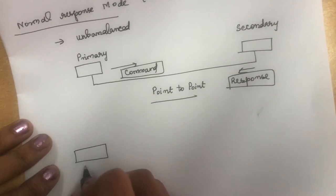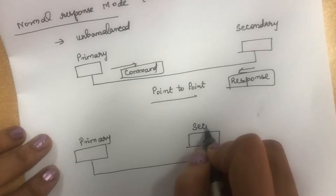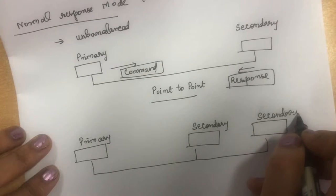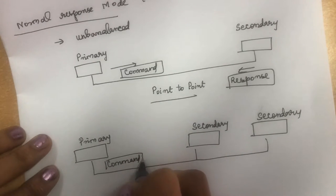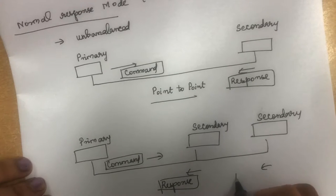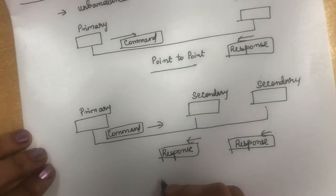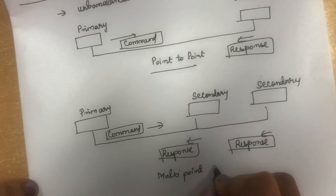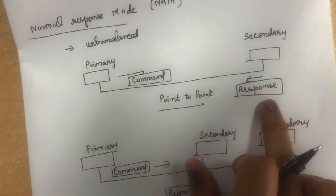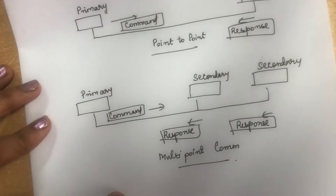Normal Response Mode can also be used in multi-point communication, where we have one primary station and multiple secondary stations. The command is sent from the primary station and the response is given by all the secondary stations. So it is unbalanced — the primary station can only send commands and secondary stations can only respond.